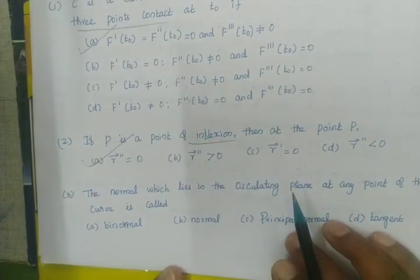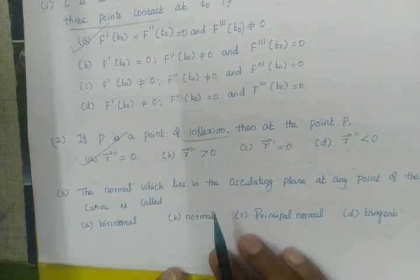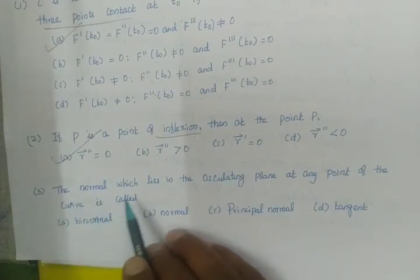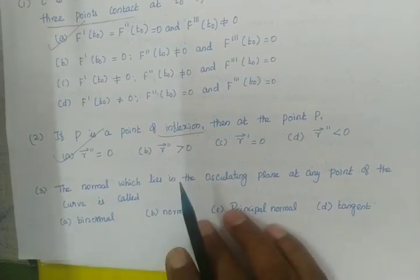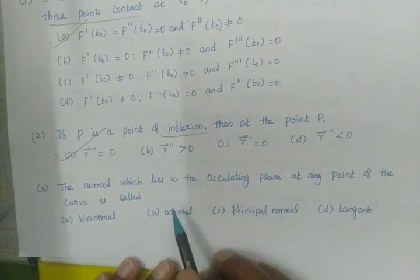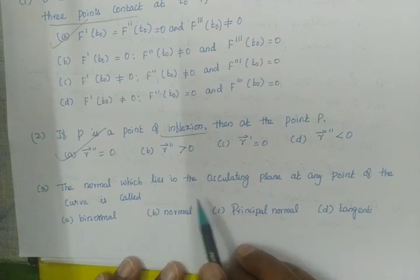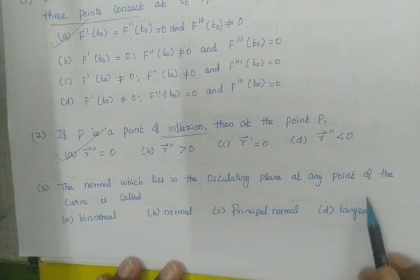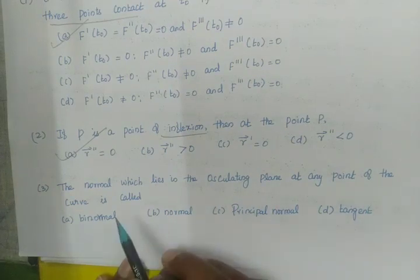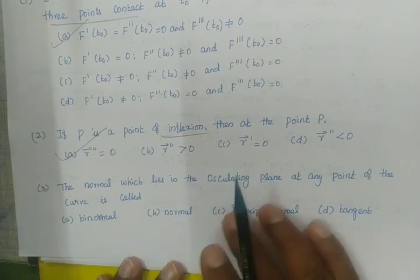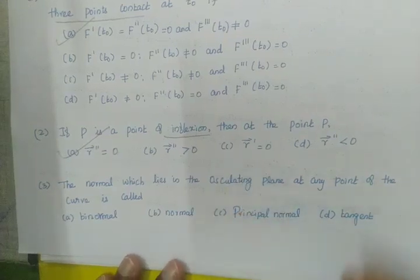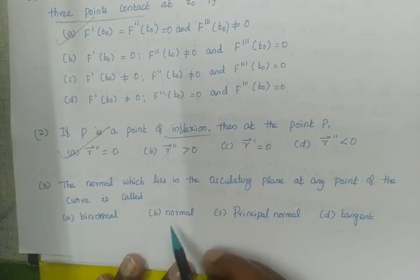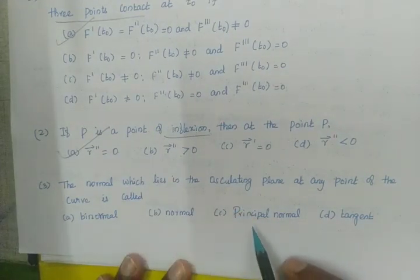The normal which lies in the osculating plane at any point of the curve is called the principal normal.